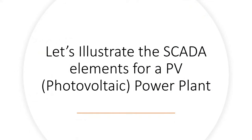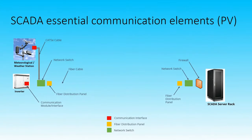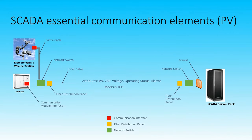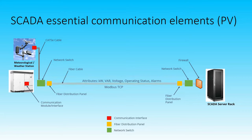Let's illustrate the SCADA elements for a photovoltaic power plant. In this basic diagram for a PV plant, attributes such as kilowatts, voltage, operating status, and alarms are being pulled from the inputs — like your inverters on the left. Those data sets are being transmitted to the SCADA server rack on the right through a fiber line via Modbus TCP. This also shows the essential communication elements like communication module interfaces as well as network switches.